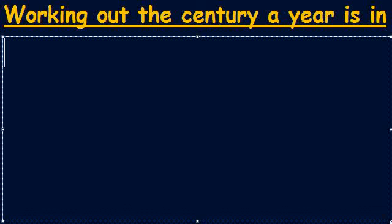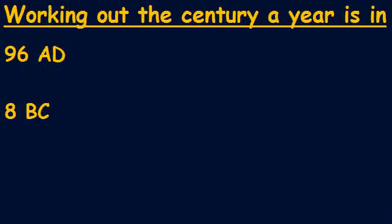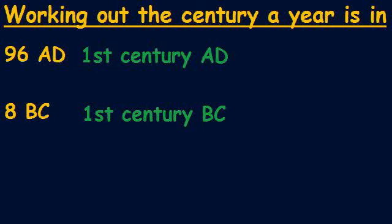I'm going to give you 96 AD and 8 BC. See if you can tell me what century they're in — pause the video and then unpause to get your answers. For 96 AD you should have got the first century AD, and for 8 BC you should have worked out the first century BC.